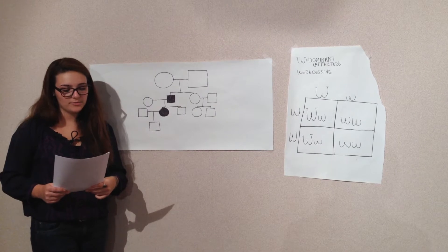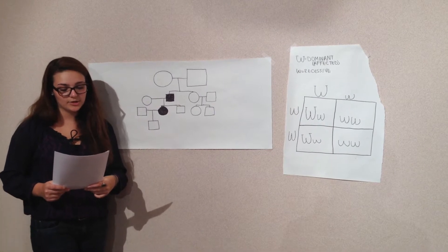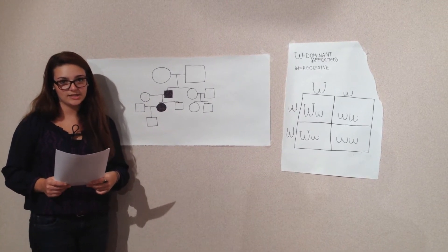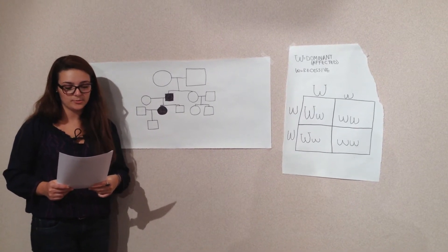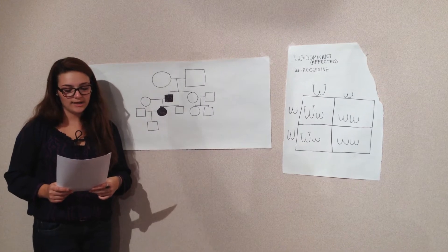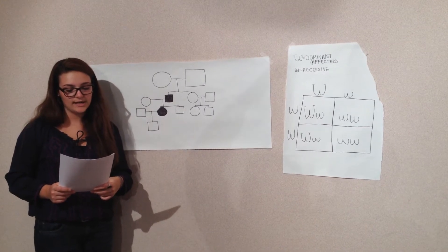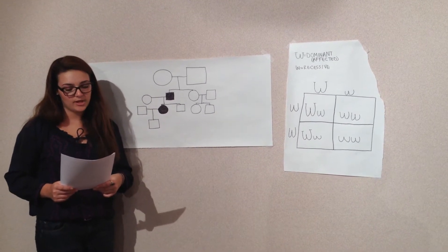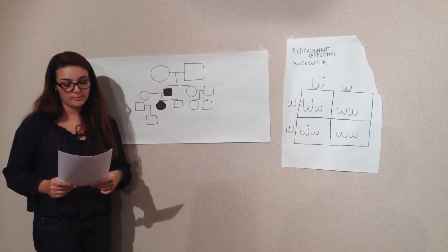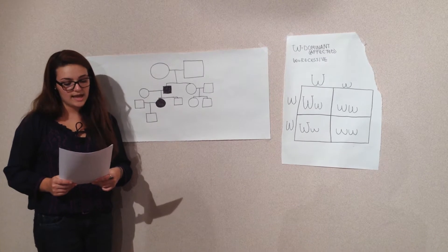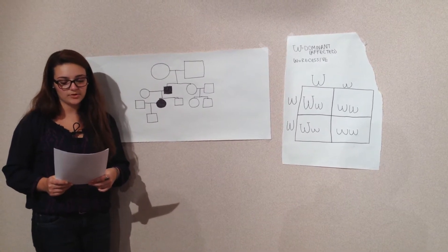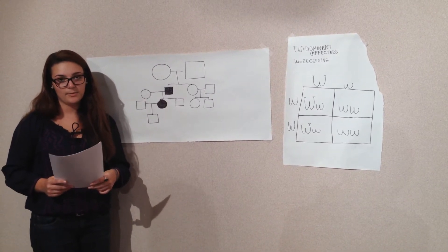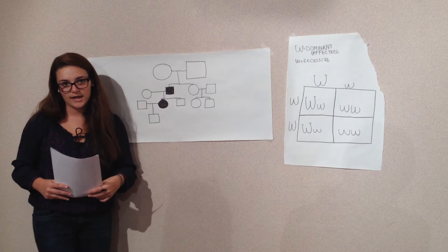Williams Syndrome is a genetic disorder caused by the deletion of 26 genes from the 7th chromosome. Most cases are not inherited but occur as a random mutation during the formation of reproductive cells. However, if a parent has Williams Syndrome, there is a 50% chance that they will pass it on to their child.